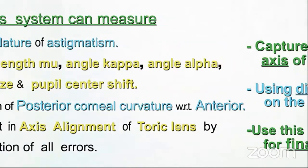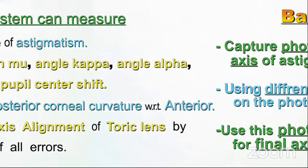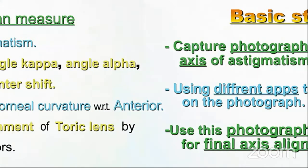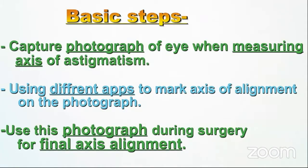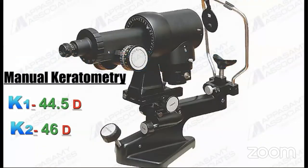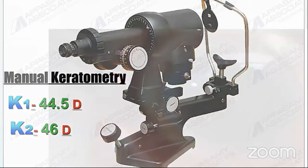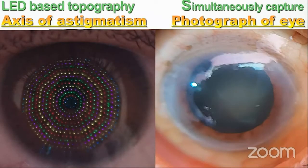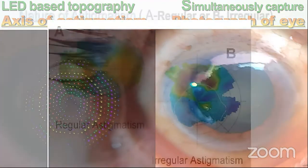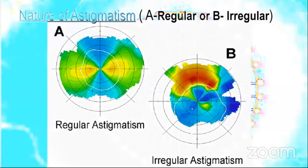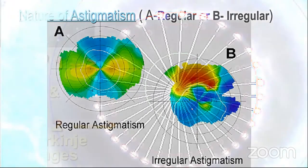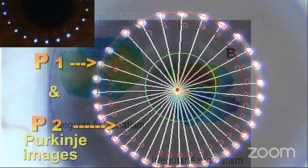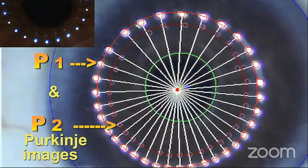The basic steps are: capture a photograph of the eye while measuring the axis of astigmatism, use different apps to mark axis alignment on the photograph, and use this photograph during surgery for final axis alignment. In the demonstration, K1 and K2 are measured from manual keratometry. LED-based topography measures the axis of astigmatism, simultaneously capturing photographs for axis marking in the same head position. The nature of astigmatism is shown by color map — whether regular or irregular — and prediction of posterior corneal curvature relative to anterior curvature is made by comparing P1 and P2 Purkinje images.